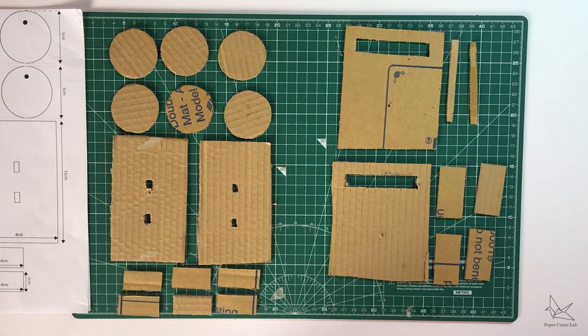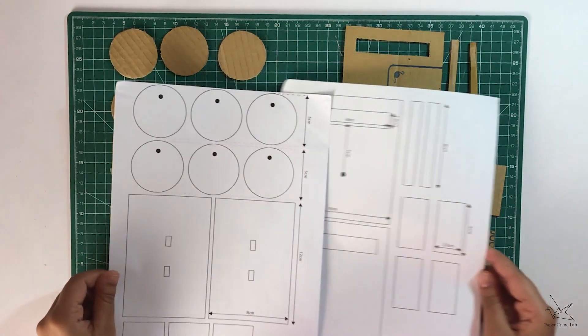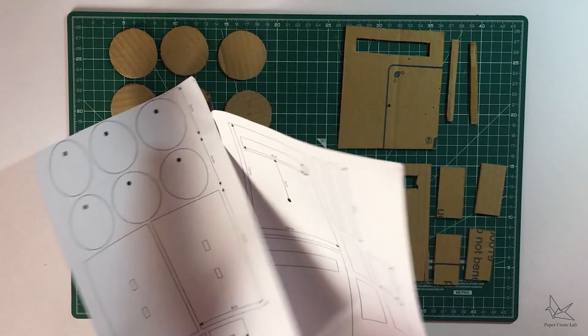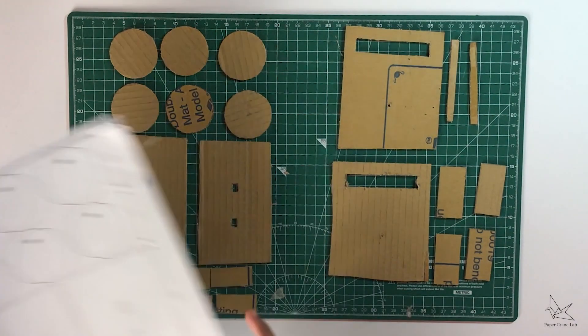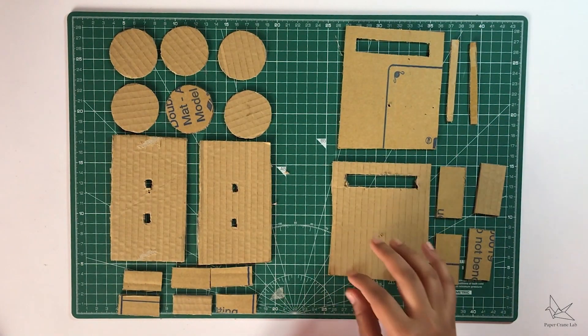So we've gone ahead and cut out the required pieces out of cardboard. Now you'll also notice in the templates that there are these dark circles. These circles indicate the parts that have to be cut into, meaning we have to put a tiny hole in these parts.